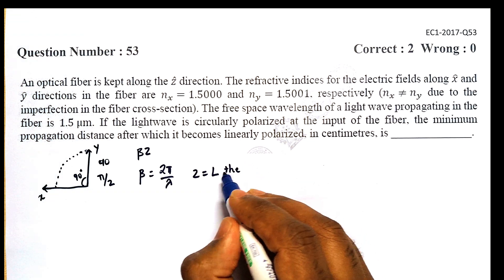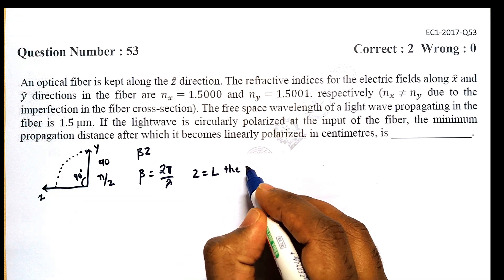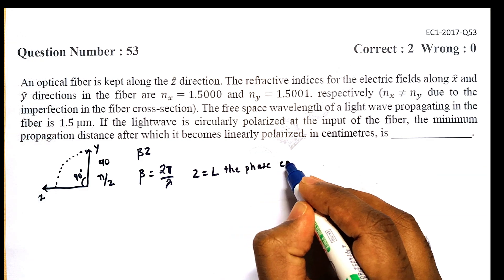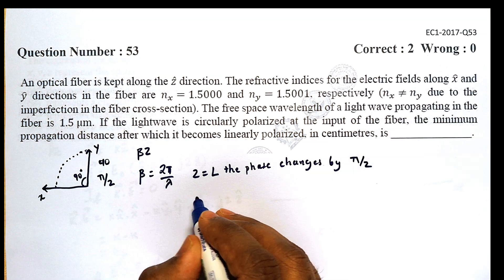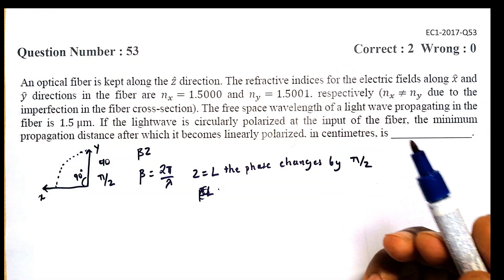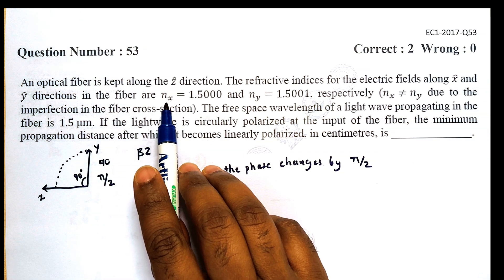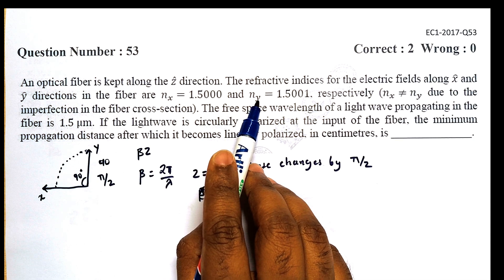At Z = L, the phase changes by π/2. That is, since the refractive indices in this optical fiber are different along the X and Y axis...